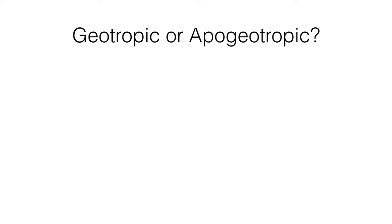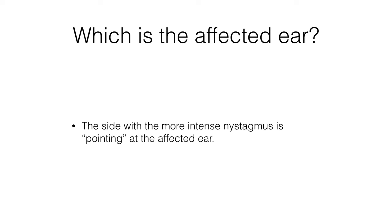Unlike posterior canal BPPV, where usually only one side demonstrates nystagmus, horizontal nystagmus will be seen on testing both sides in horizontal canal BPPV. If the nystagmus beats towards the ground on testing both left and right sides, this is geotropic horizontal canal BPPV. If the nystagmus beats away from the ground, this is apogeotropic horizontal canal BPPV. There is usually one side where the nystagmus is more intense — this more intense side points towards the affected ear.